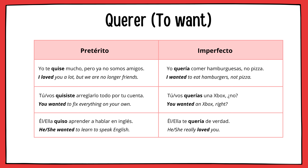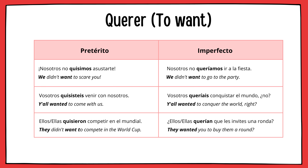Nosotros hicimos un escándalo en el avión. Vosotros hicisteis un trato. ¿Qué hicieron ellos para merecerlo? Nosotros hacíamos ruido por la noche. Vosotros hacíais más de la cuenta. Ellos hacían la cena. Next verb is querer, which means 'to want' but can also mean 'to love' — not to be confused with amar. Yo te quise mucho pero ya no somos amigos. Tú quisiste arreglar todo por tu cuenta. Él quiso aprender a hablar en inglés. Yo quería comer hamburguesas, no pizza. Tú querías una Xbox, no. Él te quería de verdad.